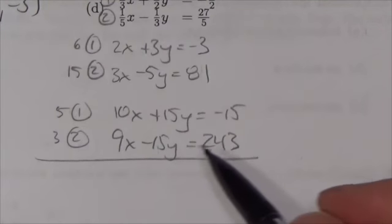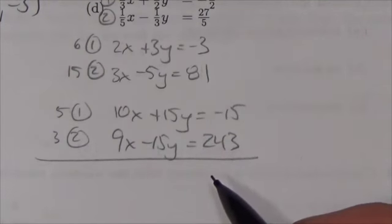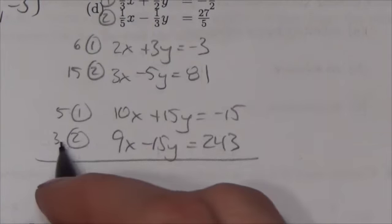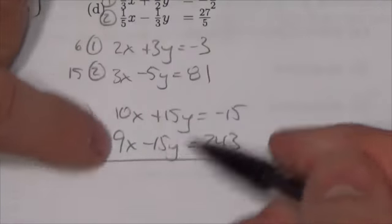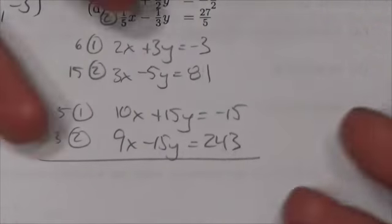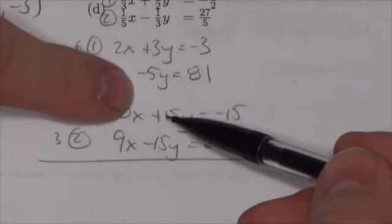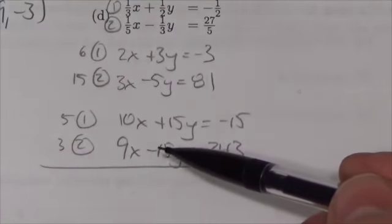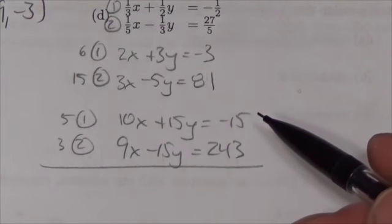Now if I add these together, I can eliminate y. They're opposite signs, so just adding them will work. Don't do subtraction because a positive minus a negative would give a bigger positive.